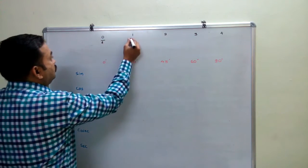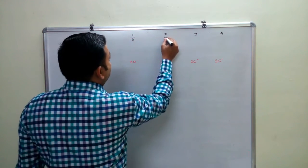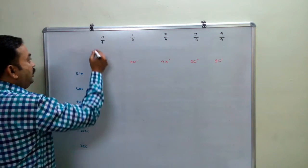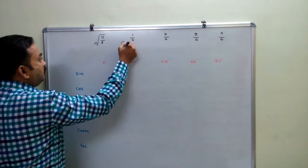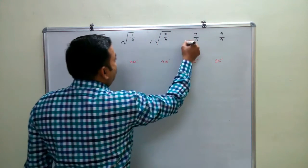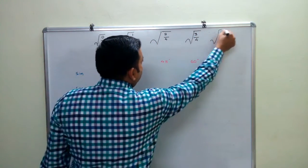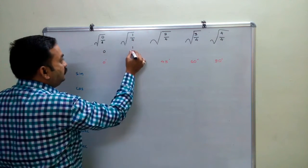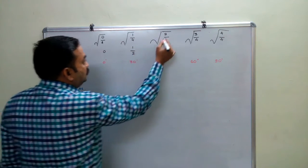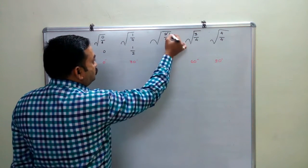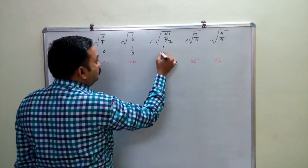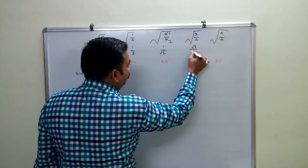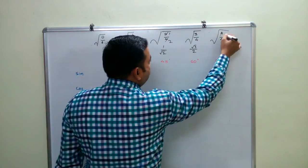You divide all these numbers by 4. And put the square root at every place. This will give: square root of 0 is 0, square root of 1 over 4 is 1/2, square root of 2/4 is 1/√2, square root of 3/4 is √3/2, and square root of 4/4 — the 4 cancels — giving 1.